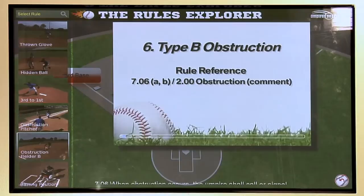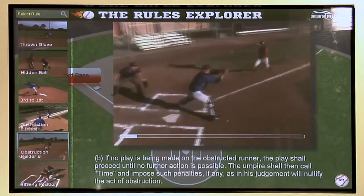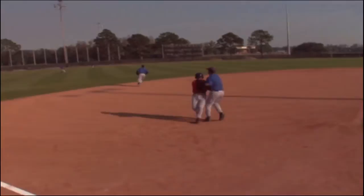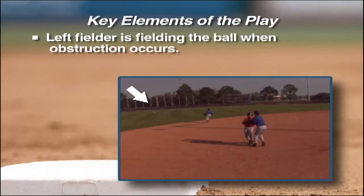A fielder who is not in the act of fielding a batted or thrown ball must not impede the progress of a runner advancing around the bases. In this play the ball has been hit to left center. The third baseman fails to avoid the runner advancing from second. Notice that the left fielder is still in the act of fielding the batted ball at the time of the obstruction.